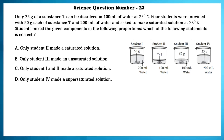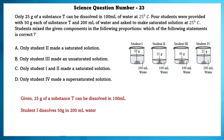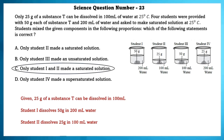Science question number 23. Only 25 grams of substance T can be dissolved in 100 ml of water at 25°C. Each of 4 students was provided with 50 grams of substance T and 200 ml of water to make a saturated solution. Student 1 dissolves 50 grams in 200 ml, and student 2 dissolves 25 grams in 100 ml. So option C is correct — only students 1 and 2 made a saturated solution.